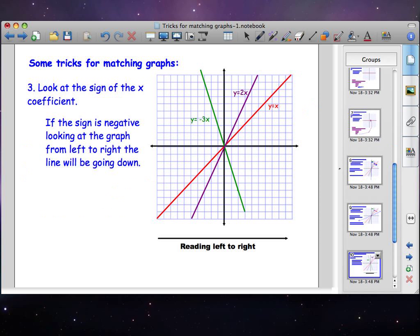The third trick I have is to look at the sign of the x coefficient. As you can see, there's two that are positive: the y is equal to x, y is equal to 2x, and one that is negative: y is equal to negative 3x.